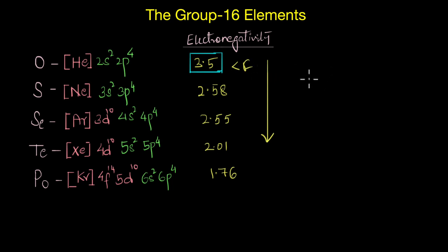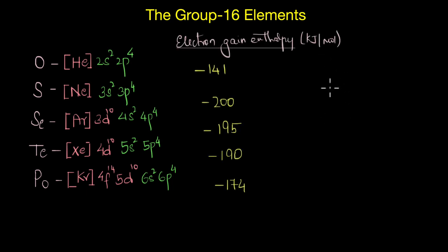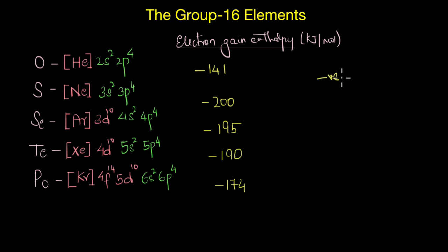It's now time to discuss another very important atomic property: electron gain enthalpy. Electron gain enthalpy is the amount of energy released when an electron is added to an isolated atom. In general, electron gain enthalpy values become more negative — that is, more energy is released — as we go across the periodic table.